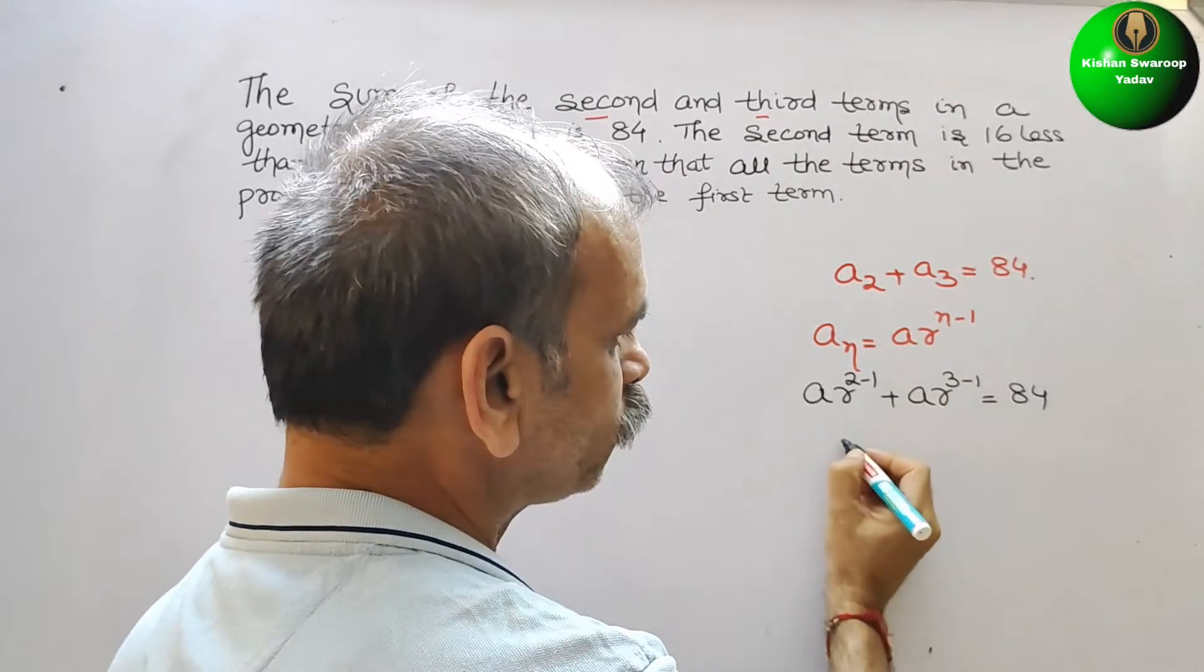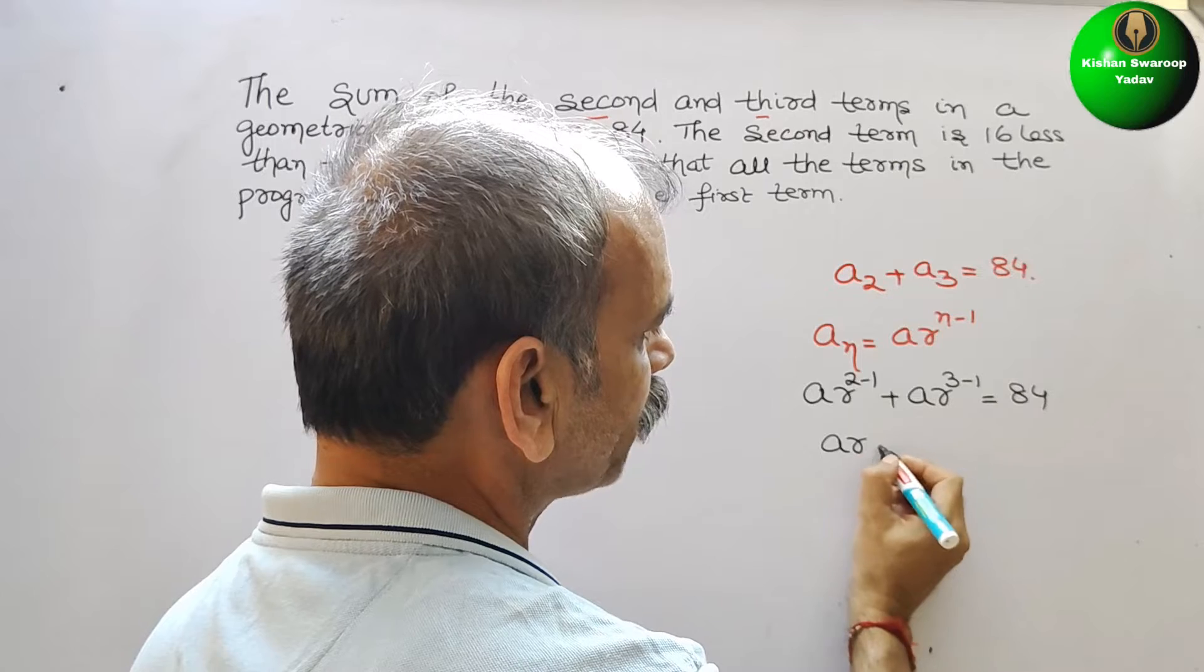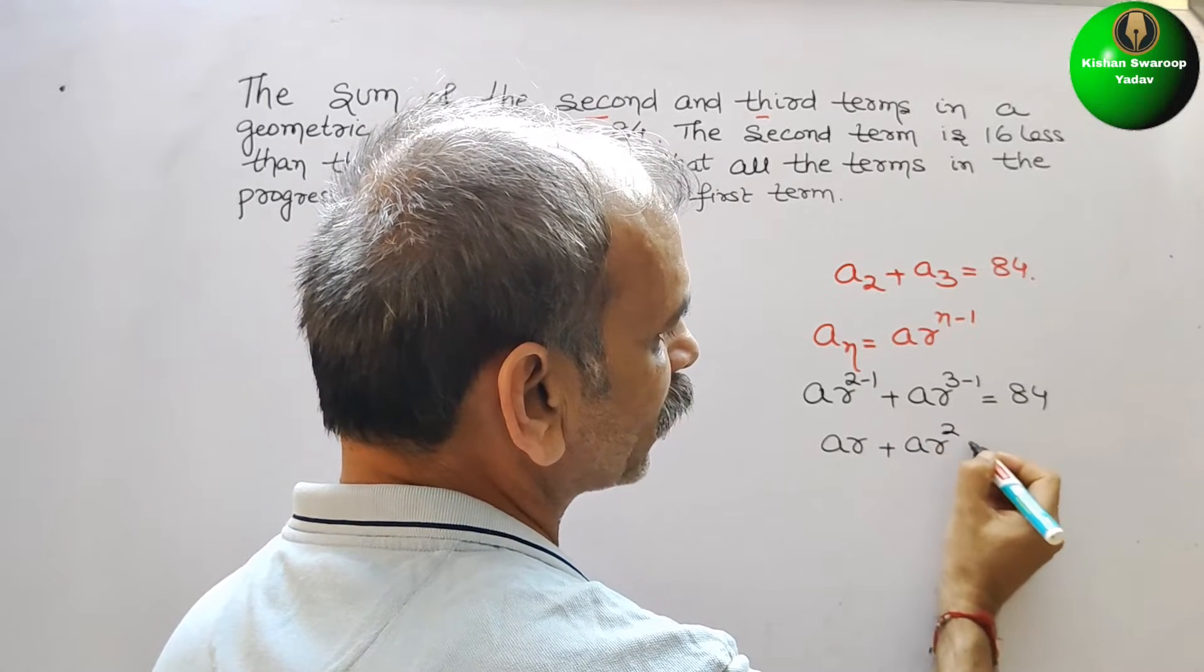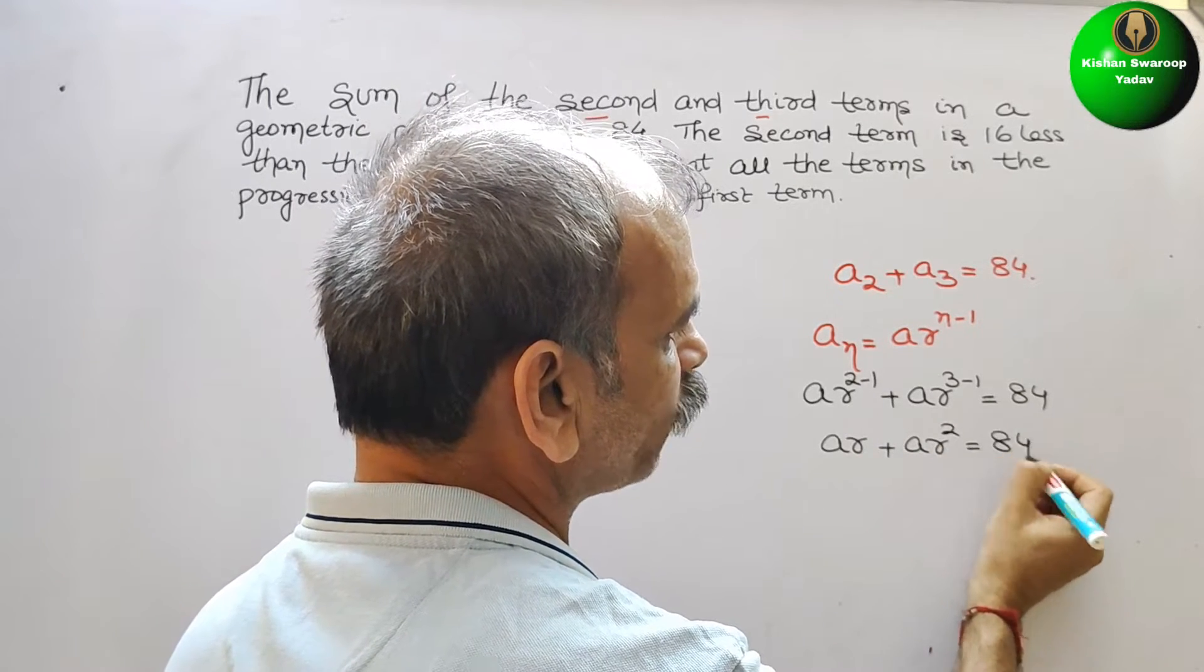So if you solve this, you will get ar plus ar square, that is equal to 84.